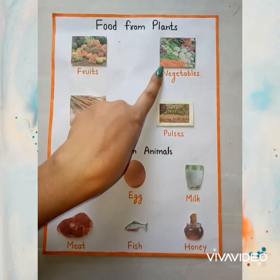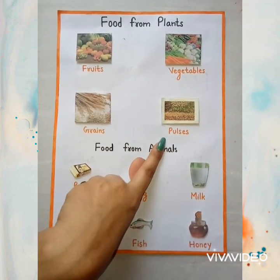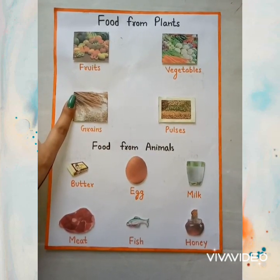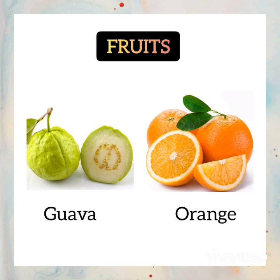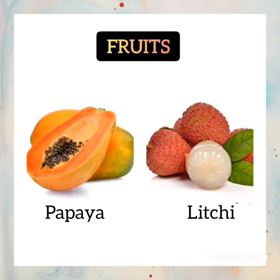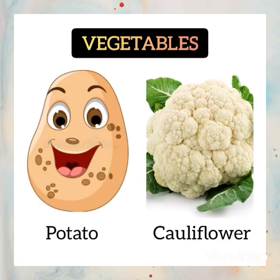Fruits and vegetables keep us fit and healthy. Grains and pulses give us a lot of energy and help us to grow. Now let's see some examples. Fruits: examples of fruits are apple, mango, guava, orange, banana, grapes, papaya, and lychee.